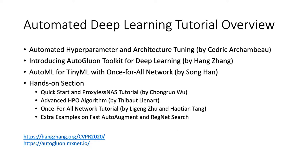In this tutorial, Dr. Cedric Ashenbo will first give a talk on Automated Hyperparameter and Architecture Tuning, covering the AutoML background. In the second talk, I will give an introduction to the AutoGluon toolkit, an AutoML toolkit for deep learning. Dr. Song Han will give a talk on AutoML for TinyML with the Once4All Network. In the hands-on section, Chongruo Wu will walk through a QuickStarter example and a ProxylessNAS tutorial. T-Bot Leonard will give a tutorial on advanced HPO algorithms. Li Gengzhu and Haotian Tang will give a hands-on section for the Once4All Network tutorial. Actual examples on Fast AutoAugment and RecognizeSearch are also provided on the tutorial website.